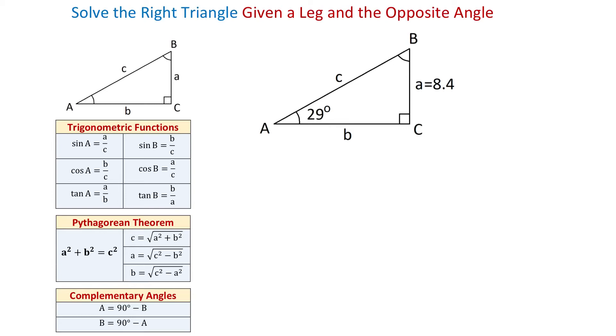In this video we will solve a right triangle given a leg and the opposite angle. We will find angle B, side B, and the hypotenuse C.